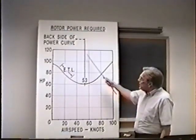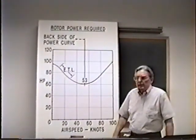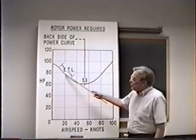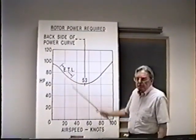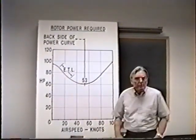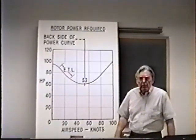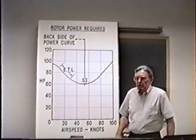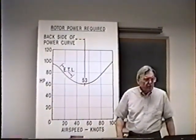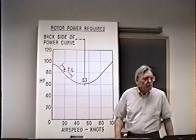Back on the backside of the power curve, everything is quite different. It takes more power to go slower and less power to go faster. Frankly, you have a hard time thinking of anything that works that way. Certainly an automobile doesn't work that way. A boat doesn't work that way. You have a difficult time thinking of anything that requires more power to go slower and less power to go faster.